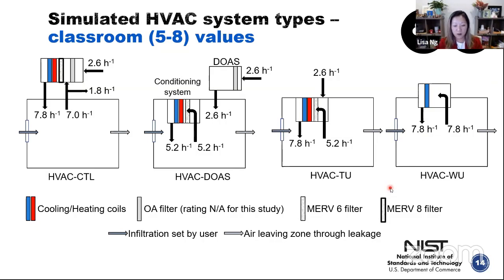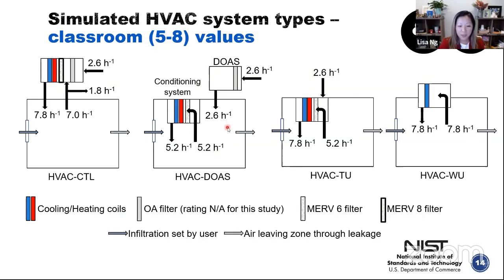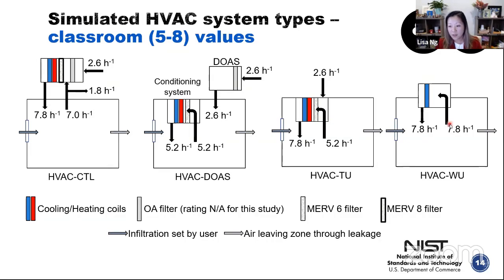We looked at different ventilation types because schools vary widely. CTL is the central system — a pressurized system where supply is greater than return, outdoor air is filtered, and return air is filtered through a MERV 8 filter. The DOAS system is a 100% dedicated outdoor air system; its conditioning unit has a MERV 6 filter. The terminal unit system is like the DOAS system but without dedicated outdoor air — air comes directly into the system and mixes with return air. The window unit system has negligible outdoor air and a negligible rated filter. For the DOAS system, note there are different types — this is an air-driven one; if you have radiative baseboard heaters there may not be this exchange of air.